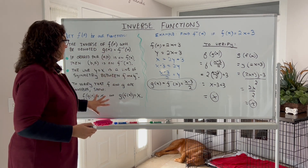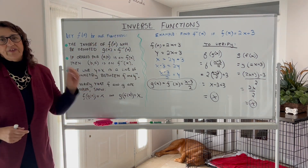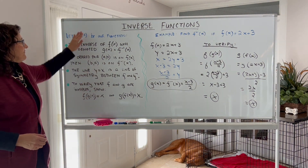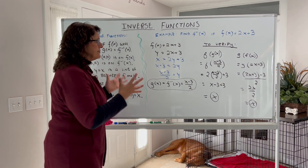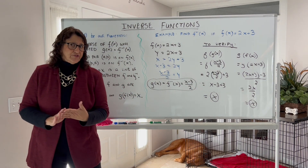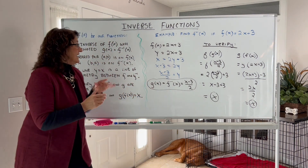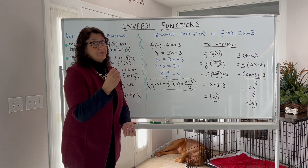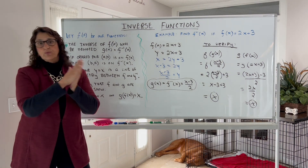If you were to graph a function and its inverse, the line y equals x is the line of symmetry — you can check it graphically that way. This is a bit about inverse functions and their properties. My next video is a calculus video where we'll find the derivatives of inverse functions, and the property that (a, b) on f means (b, a) on f inverse will be especially important there.